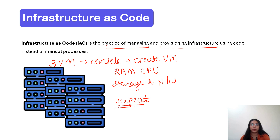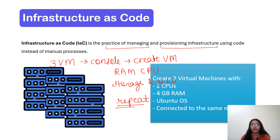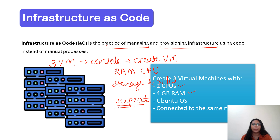To reduce this manual work, we can make use of infrastructure as a code. In infrastructure as a code, we create a file in which we mention the resources and their configurations. Like if I want to create three virtual machines, I will mention the number of CPUs, the RAM, the operating system, and the networking details. With this, we will be able to create multiple resources without repeating the manual procedure — just with the help of a file. That would be infrastructure as a code.